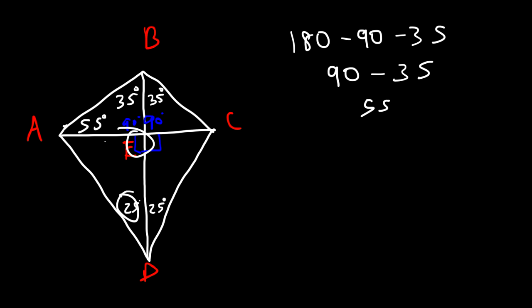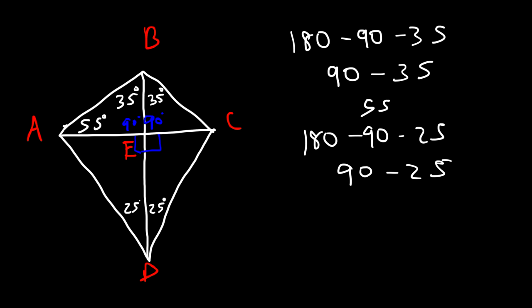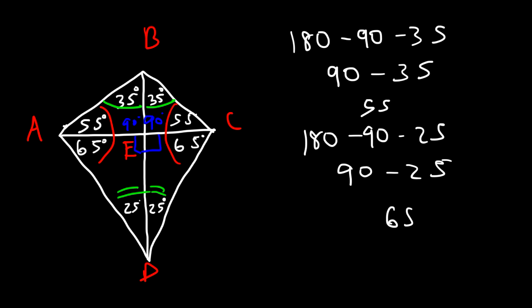In triangle CDE, angle CED is 90 and angle CDE is 25, so the missing angle DCE equals 180 minus 90 minus 25, which is 65 degrees. This means angle ACB is also 65 degrees, and since the three angles of triangle ACB must sum to 180, angle ABC is 55 degrees. Angles B and D are congruent as a whole, both summing to 120 degrees, though not bisected equally.